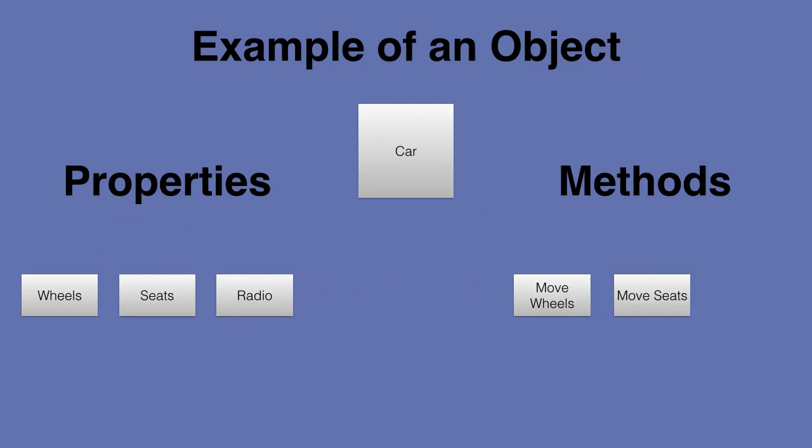Move the seats, right? That could be one. If you have one of those cars that have electric seats, that could be one. What about turn on the radio? That also could be a method, a function, a behavior of that car.